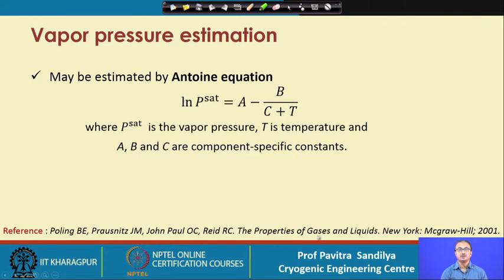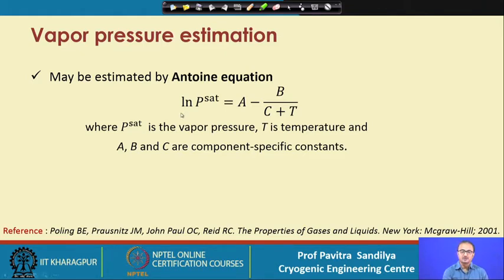Below we have shown the reference which may be referred to in order to get the values of A, B, and C. Please note that whenever you are using a correlation you should be aware of the units being used. The Antoine equation and its parameter values have been reported in various literature — sometimes in terms of natural logarithm and sometimes in terms of logarithm base 10.